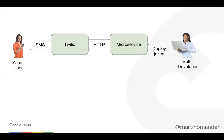Beth imagines that Alice will send an SMS message and that Beth will use the Twilio gateway for that. If you haven't used Twilio before, they're a great company — not affiliated with Google, but used for a lot of apps. They basically take SMS messages and convert them to HTTP that can then hit your microservices. By the same token, whatever you return when they hit your microservice with an HTTP call, Twilio will send that back as a responding text message to the user. These two boxes are a lot more palatable than the 27 boxes in the previous diagram.